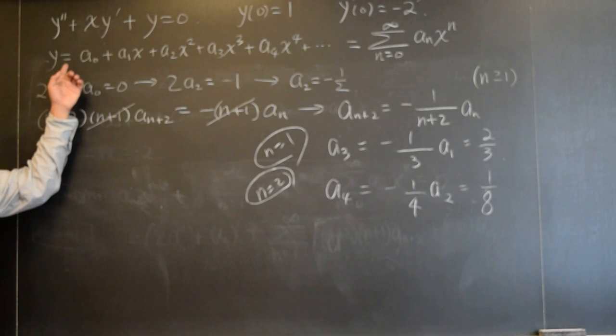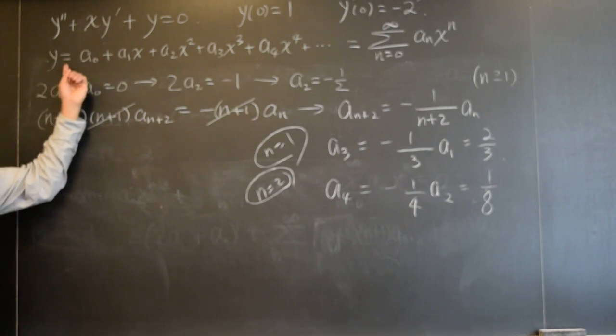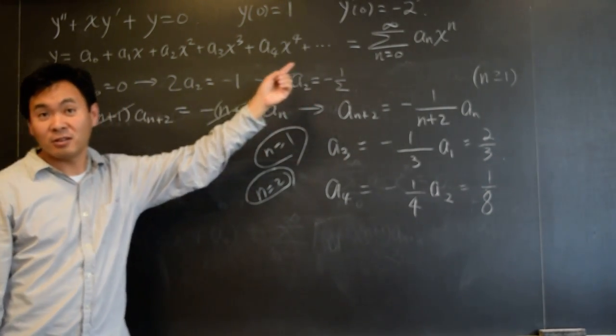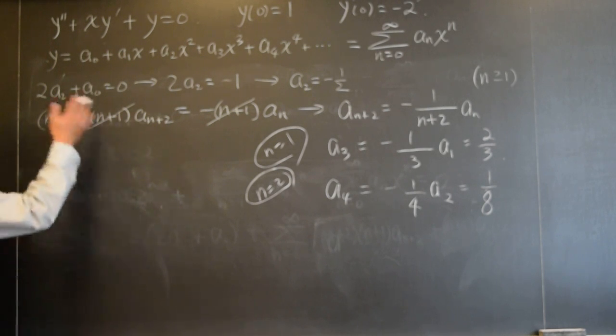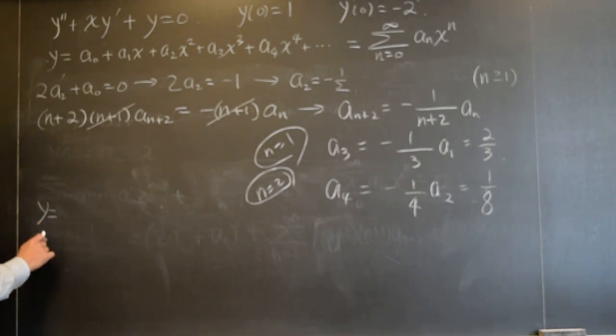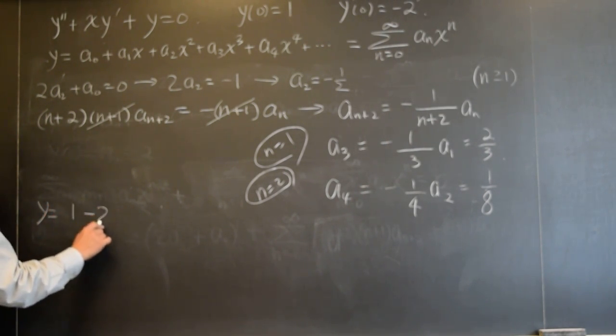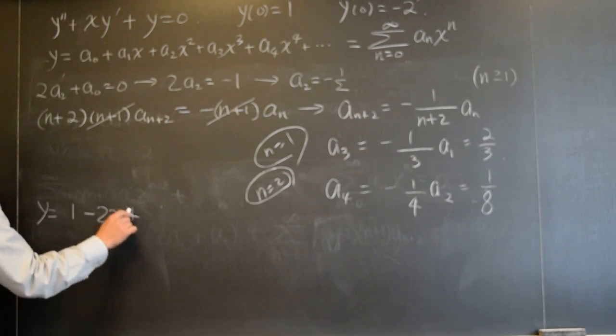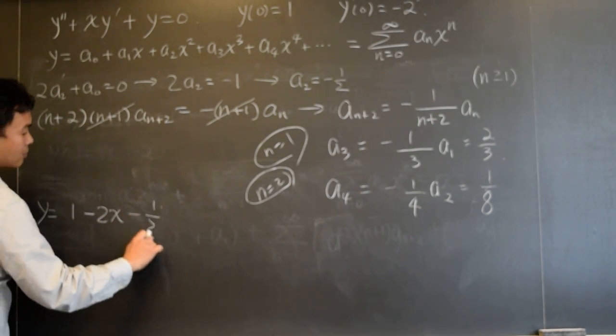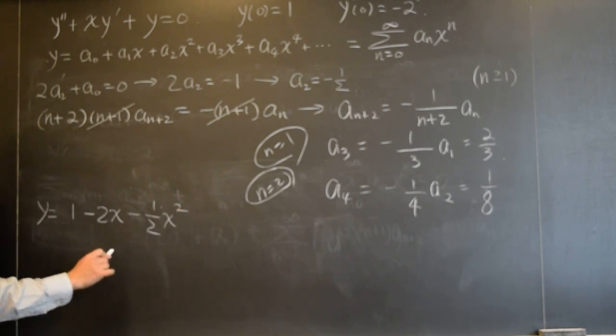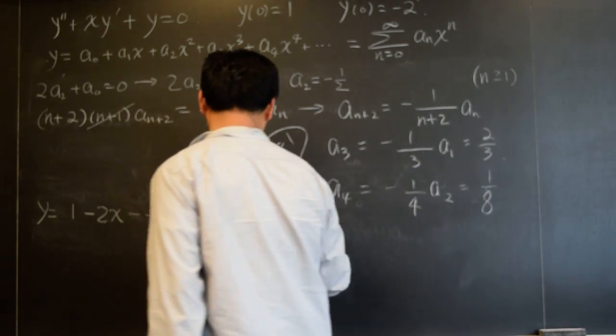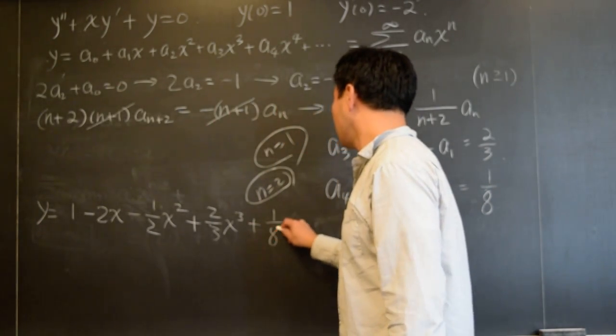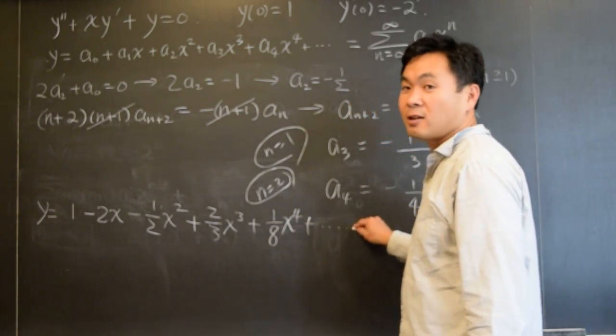So what's your solution y then? Y, we started out by saying that your y is this thing, right? So now we can just plug in, happily plug in the values that we got and then write down what y is. Y is therefore: a zero is one, a one was negative two x, a two is negative one-half x squared, a three is two-thirds x cubed, a four is one-eighth x to the fourth, plus dot dot dot. Okay.